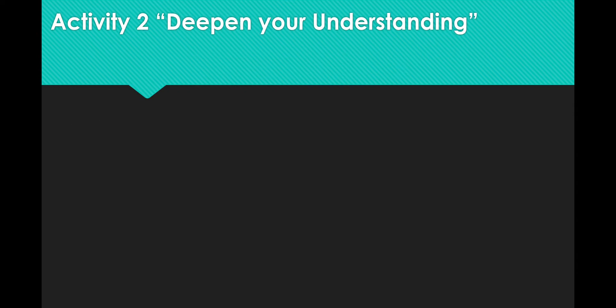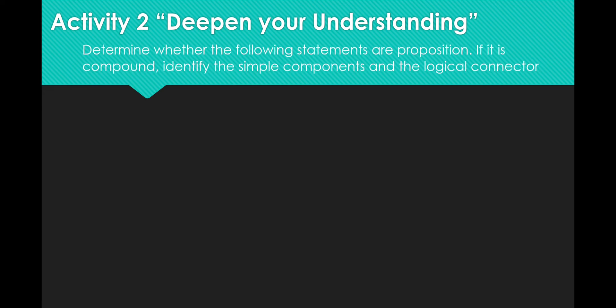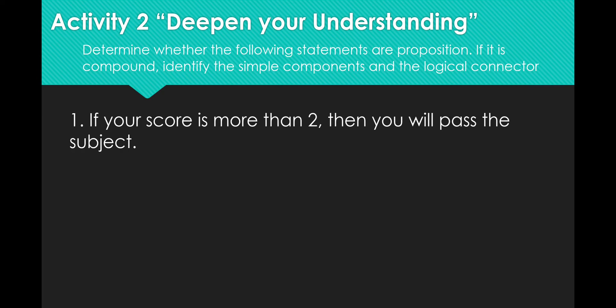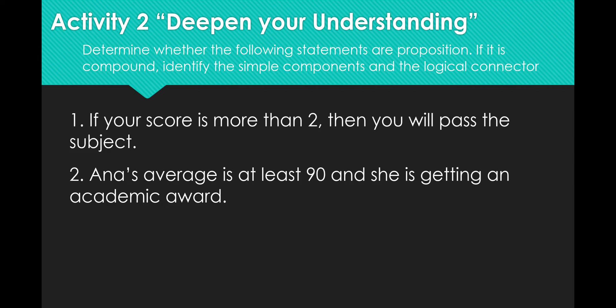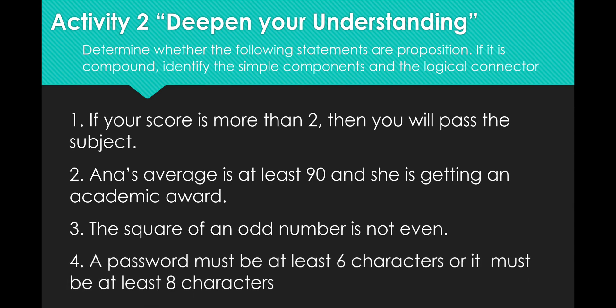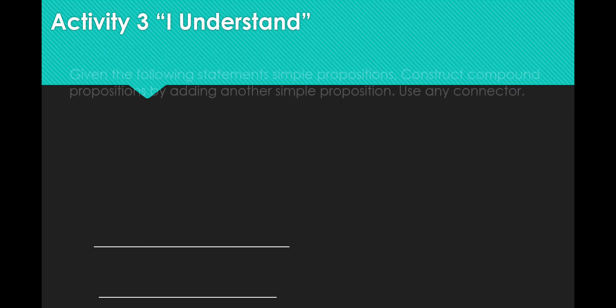For activity two, deepen your understanding. Determine whether the following statements are propositions. If it is compound, identify the simple components and the logical connector. Number one, if your score is more than two, then you will pass the subject. Number two, Anna's average is at least 90 and she is getting an academic award. Number three, the square of an odd number is not even. Number four, a password must be at least six characters or it must be at least eight characters.